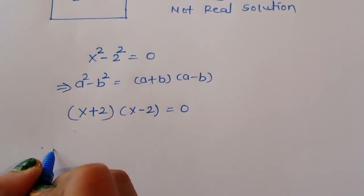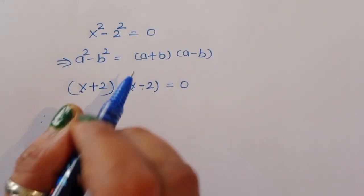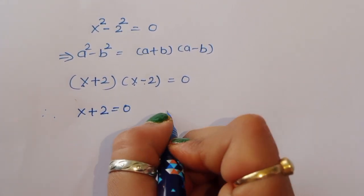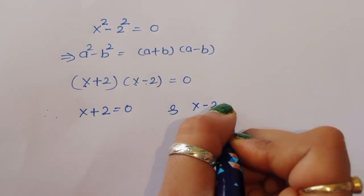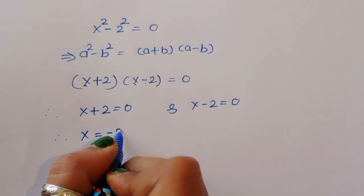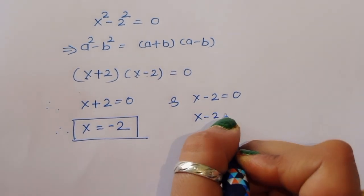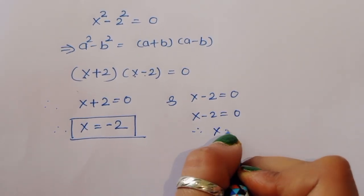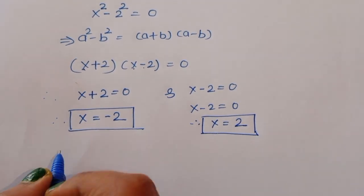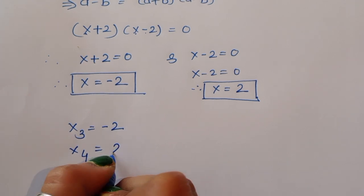From (x + 2)(x - 2) = 0, we get two equations: x + 2 = 0 and x - 2 = 0. Therefore x = -2 and x = 2.